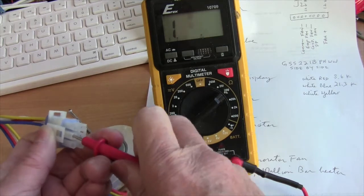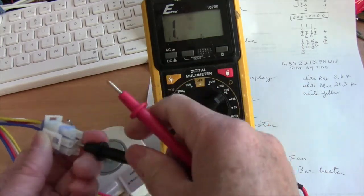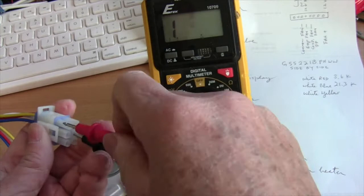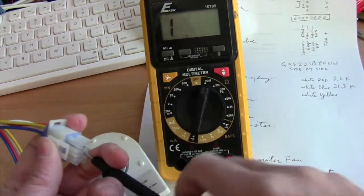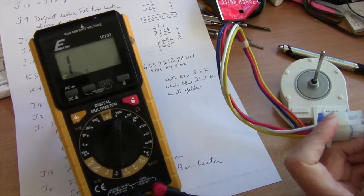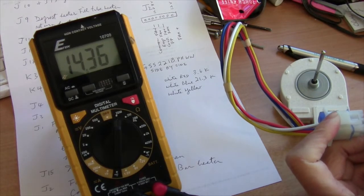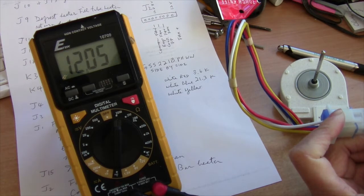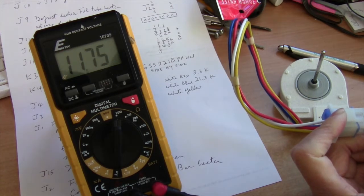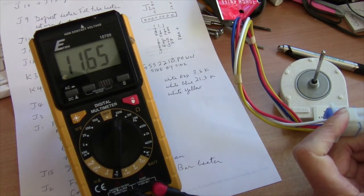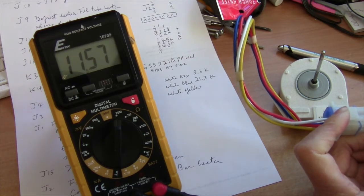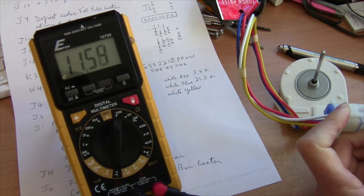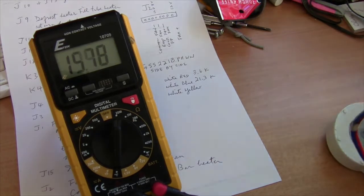Now I have the white and the yellow. I have to set it to 200 mega ohm. That would be about 11.6 mega ohm.